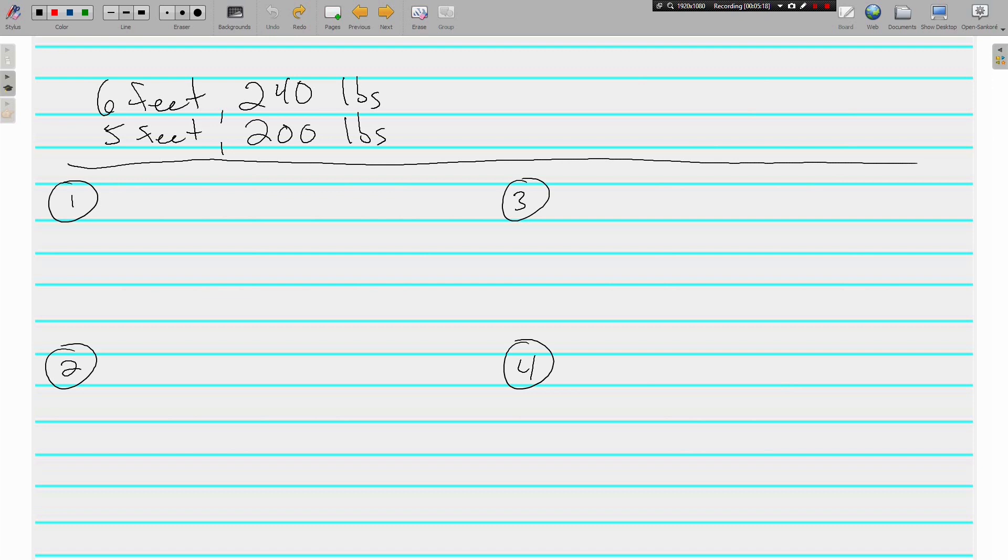First method's dividing. And I'm actually going to put the bigger number on top. You don't have to. It's just a little easier to work with this time, I think. 240 divided by 6 is 40. And 200 divided by 5 is also 40. They both equal the same thing. They are equivalent, which means that these ratios are proportional. We already know, but I'm going to show you the other three methods as well.